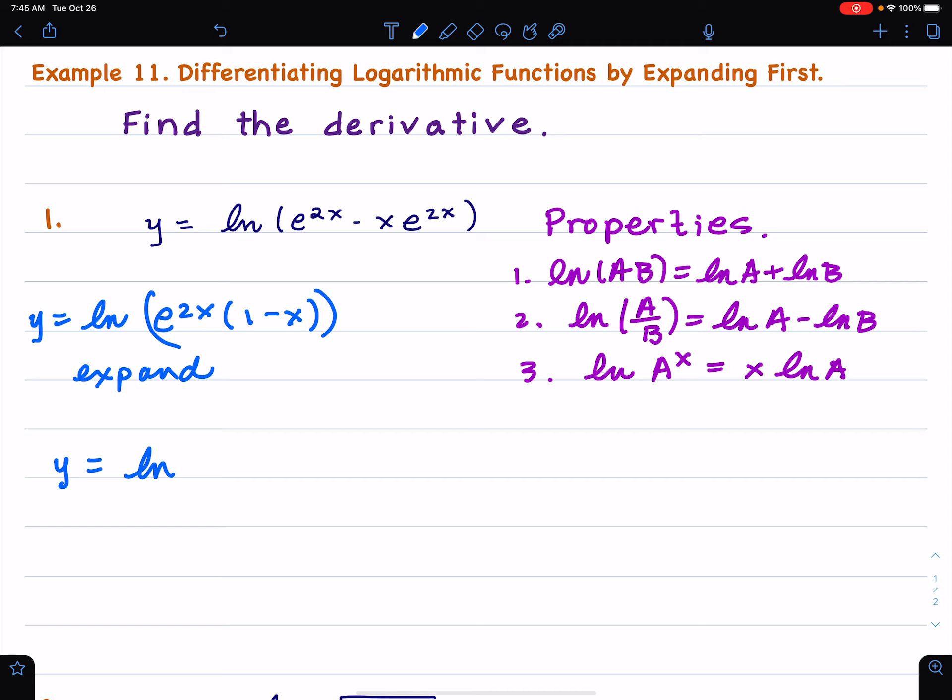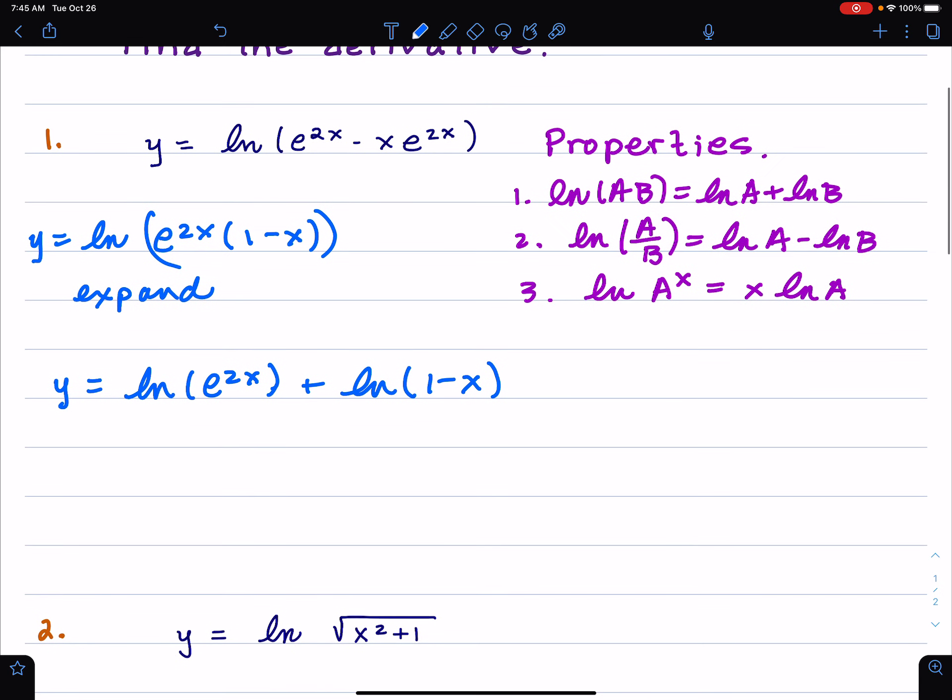So I get y = ln(e^(2x)) + ln(1-x). And then I have another little property, which is that ln(e^x) = x. Might as well write down e^(ln x) = x at the same time. And what it is, is that the logarithm and the exponential are inverse functions, and so they cancel each other out under composition. Notice this is not multiplying ln times e^x. That's not multiplication. That's ln composition e^x, not product.